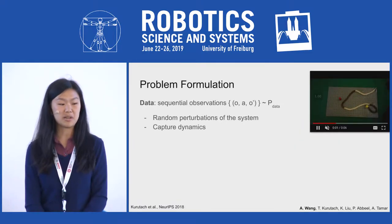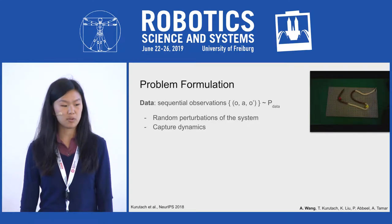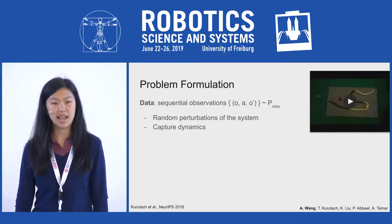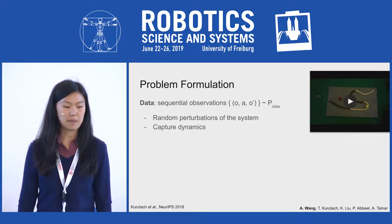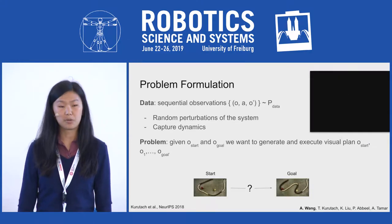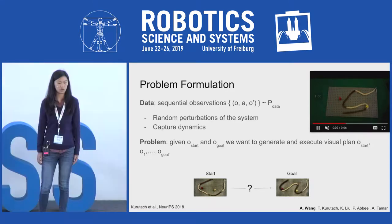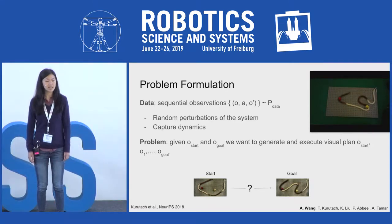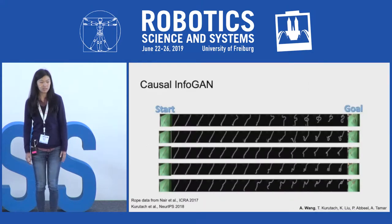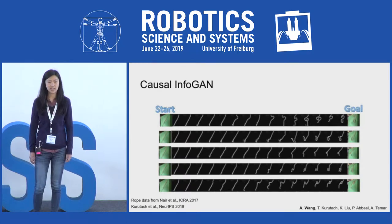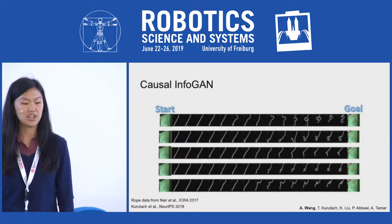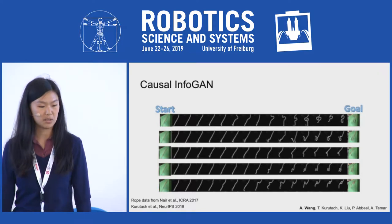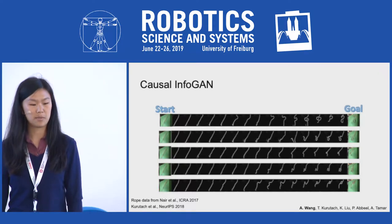For us, having a machine imagine means generating a visual plan. Our data takes the form of sequential observations o and o-prime and an action a that brings the former to the latter, collected from random perturbations of the system to capture physically feasible dynamics. Given an observation start and observation goal, we want to generate and execute a visual plan that brings the object all the way to the goal state. The relevant model we build on is called the Causal InfoGAN, which takes a start state and goal state as input and generates all intermediary steps.